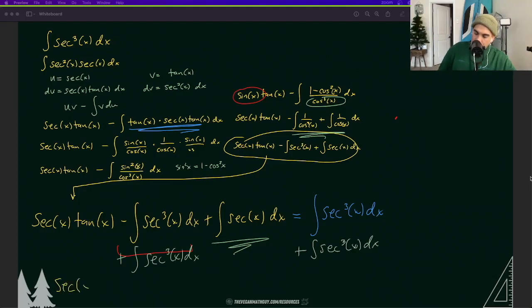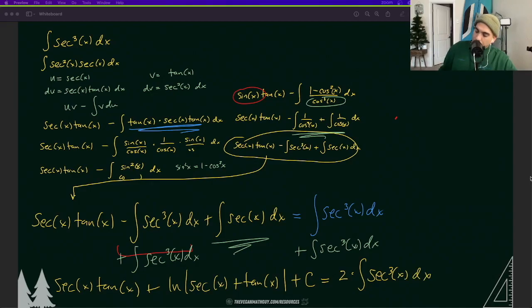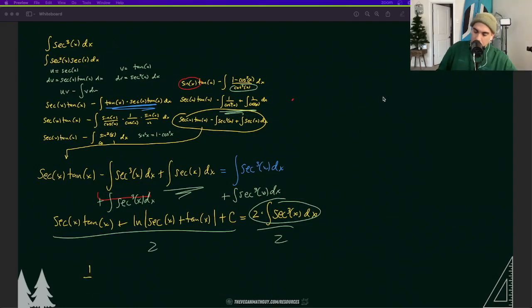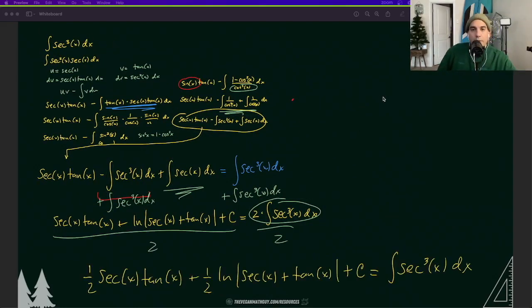That leaves us with secant x tan x plus integral of secant x dx. Let's go ahead and integrate that. That is natural log of secant x plus tan x plus C equals two times integral of secant cubed x dx. Now we want to find the value of that integral, so all we have to do is divide everything by two. That's the integral there on the bottom.